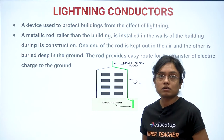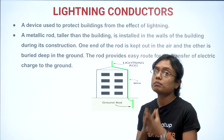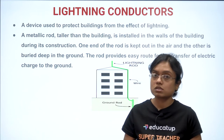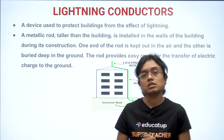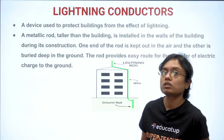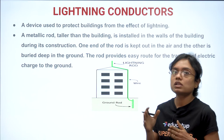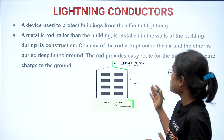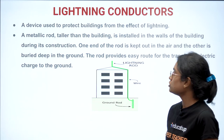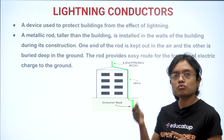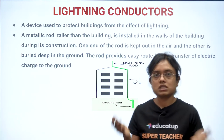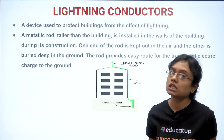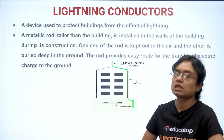Lightning conductors are devices used to protect buildings from the effect of lightning. A metallic rod taller than the building is installed in the walls during its construction. One end of the rod is kept out in the air and the other is buried deep in the ground. The rod provides an easy route for the transfer of electrical charge. The current travels down the rod into the earth — essentially an earthing procedure — and your house is saved from lightning.